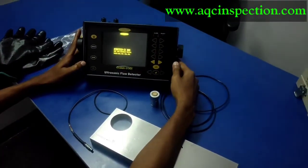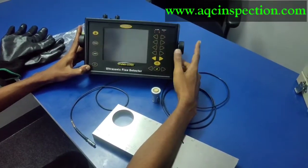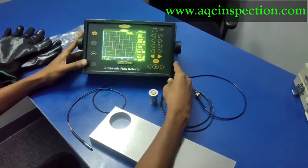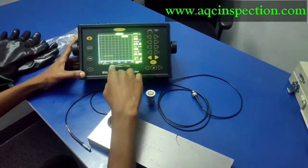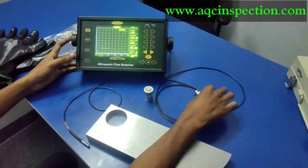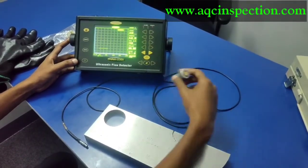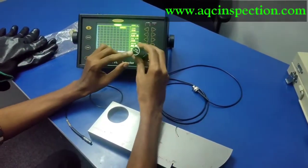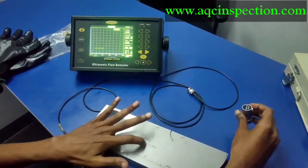This right here is the ultrasonic flaw detector which we are going to use for this calibration. This model is Modsonic Einstein II DGS, it's an Indian make model. We are going to see the calibration of a normal probe which is a 10 mm diameter crystal, 4 MHz frequency using V1 block.